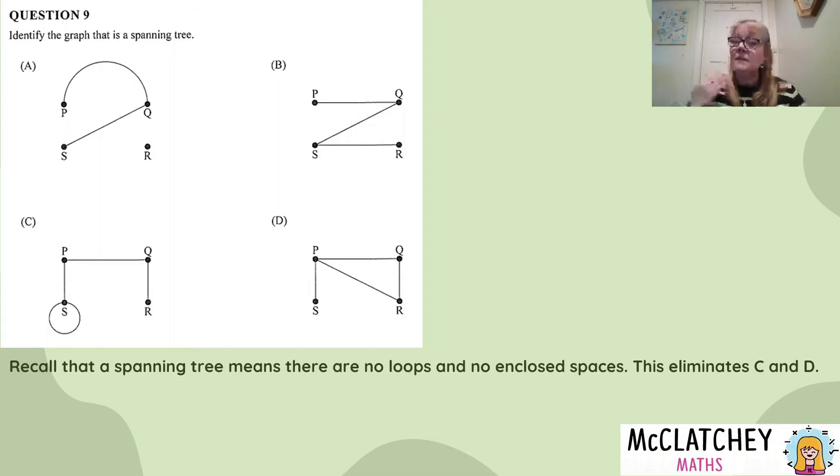Firstly, there can be no loops, no enclosed spaces. So that's going to eliminate C because you can see C has a loop and D has this PQR, we call it a face, it's an enclosed space in a network. So it's not a spanning tree.